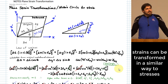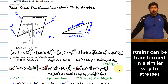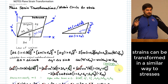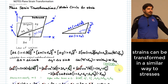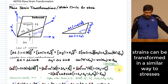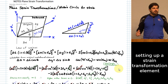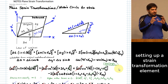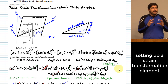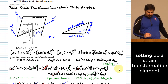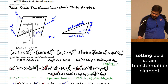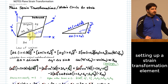Just like we can transform stresses into new coordinate systems, we can also transform strains into new coordinate systems. I'm going to do a derivation showing how that's done. We start with a little element of material — we're working in 2D for this discussion. We begin with a small piece of material that is square in shape with a particular size.